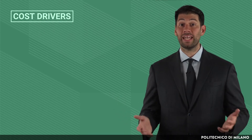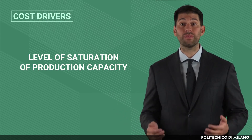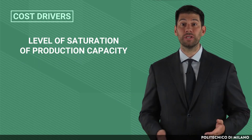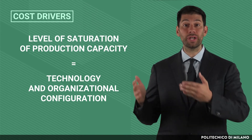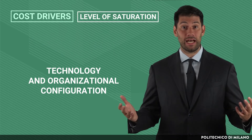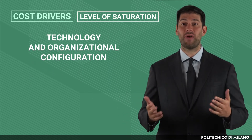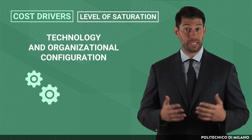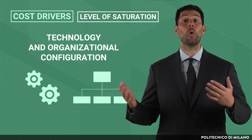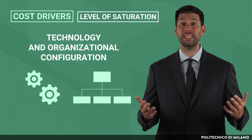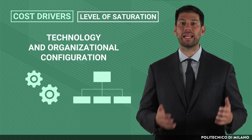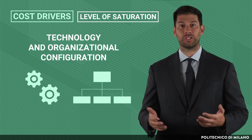First of all, we can analyze the level of saturation of production capacity of what is called the technology and organizational configuration of the company. The underlying idea is that every company defines the technology and organizational method it will use to plan, develop, and coordinate those activities needed to put products on the market. These methods are called technology and organizational configuration.